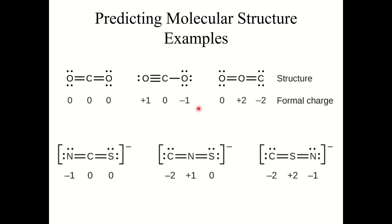When choosing among Lewis structures with similar formal charge distributions, the structure with negative formal charges on the more electronegative atoms is preferable. For example, here are three different Lewis structures for carbon dioxide. All three are technically valid — they all use 16 electrons (4 from carbon and 12 from the two oxygens) and all atoms have octets. So how do we decide which is best? That's where formal charges come in.